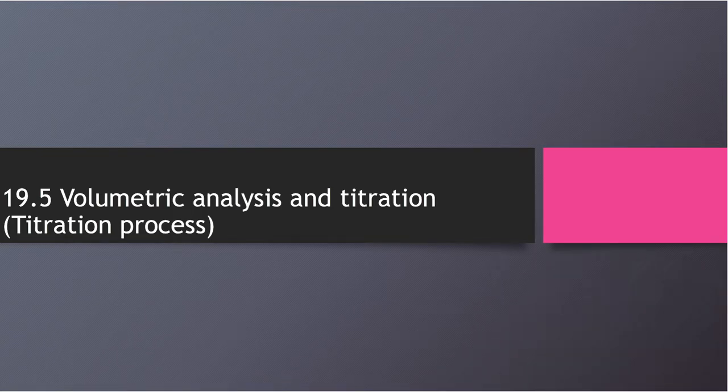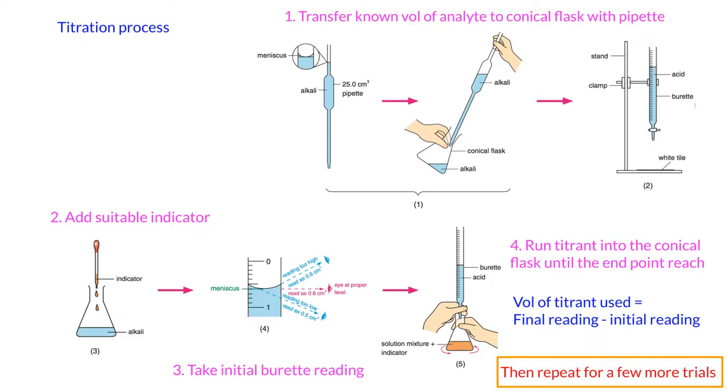This video, we're going to talk about volumetric analysis and titrations. So we'll focus on the titration process here. For the titration process, first of all, you have to transfer a known volume of analyte to the conical flask with pipette. Because you are using pipette, so the volume of the analyte used will be very accurate.